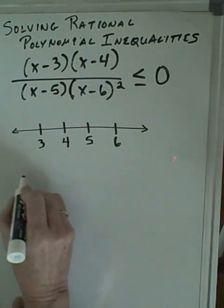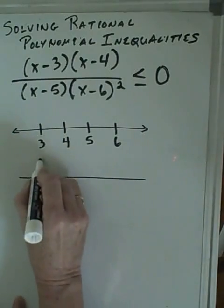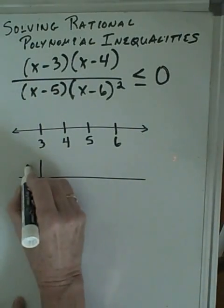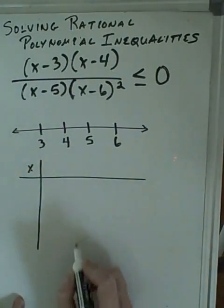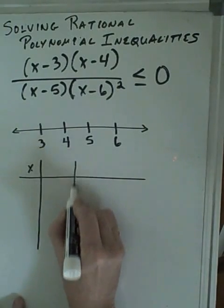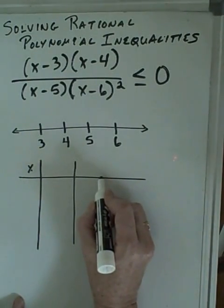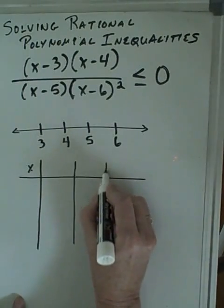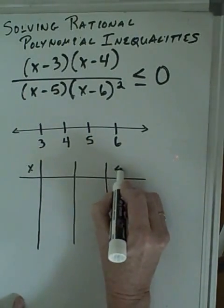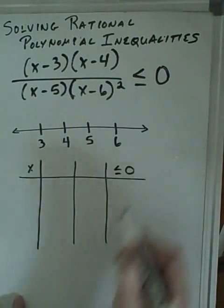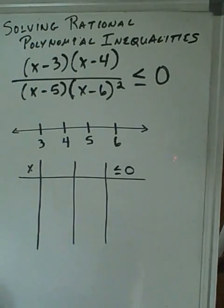So we're going to develop something called a sign chart. We're going to test different x values, we're going to find out whether it's positive or negative, and then we're going to determine is that value less than or equal to zero?